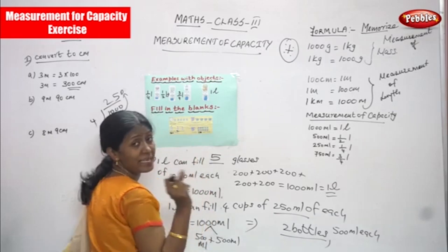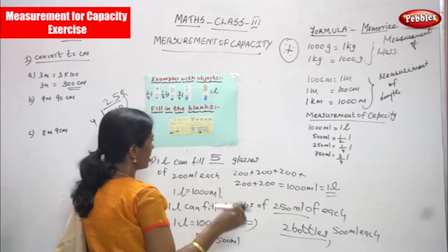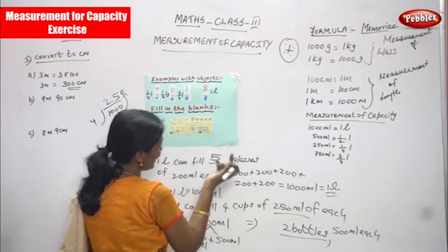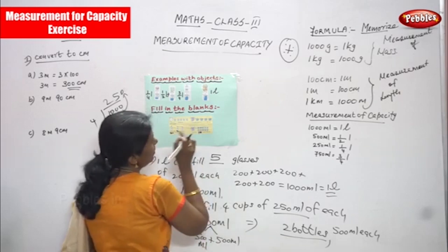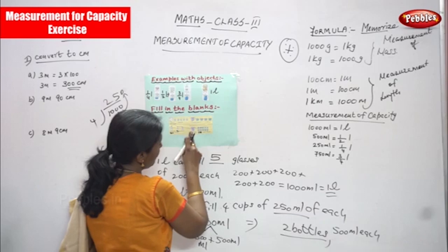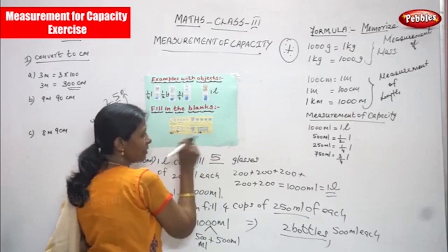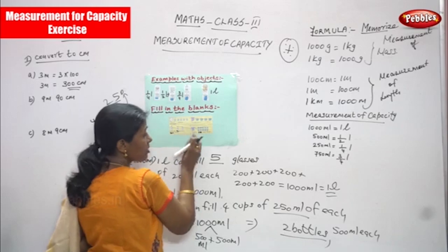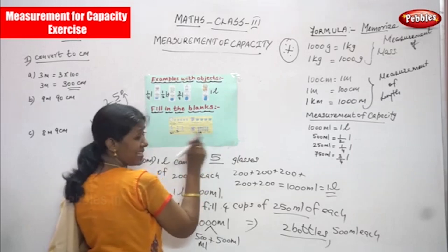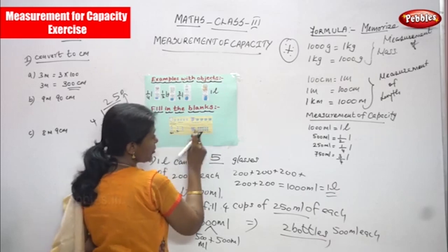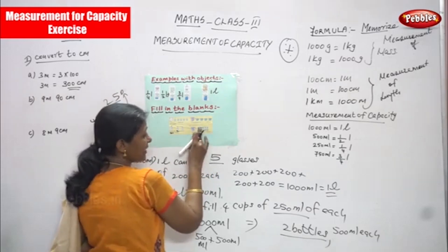Each mug contains 100 ml of coffee or tea — whatever it may be. This is a one liter can, fully filled with milk. It is 1000 ml, that is called one liter. Now we are going to split into 10 mugs — each mug holds 100 ml. So 10 mugs contain 1 liter of water or juice or milk, and each mug contains 100 ml.